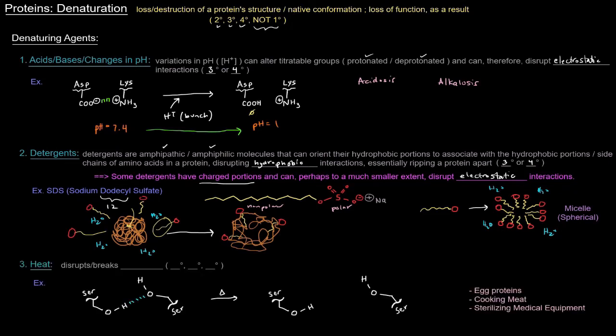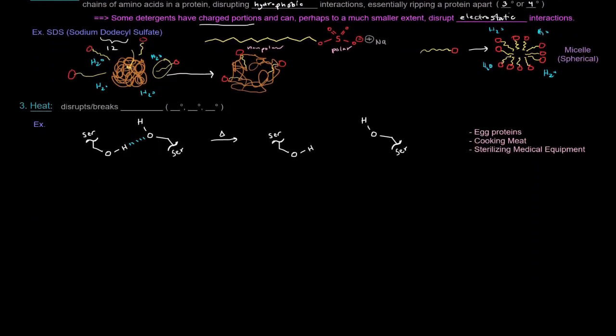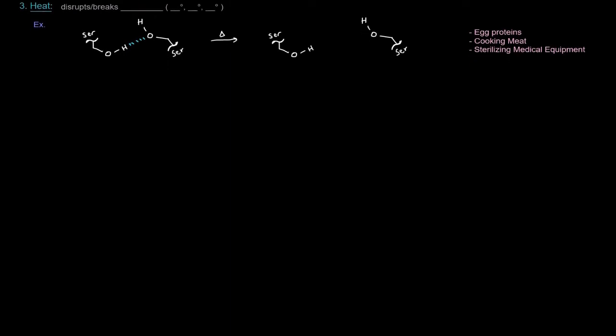Next up, heat. So, heat pretty much disrupts or breaks hydrogen bonds. And hydrogen bonds hold together secondary, tertiary, and quaternary structures. So, all those can be ruined by excessive amounts of heat. Here I've drawn a serine with its OH group side chain and then another serine here. I didn't draw the whole amino acid, but we can see here that there's a hydrogen bond that is holding these guys together right there. And if we add enough heat, the atoms, these molecules will vibrate, they'll have a higher kinetic energy, and they'll move apart. And so, that hydrogen bond that used to be there between them will be broken.